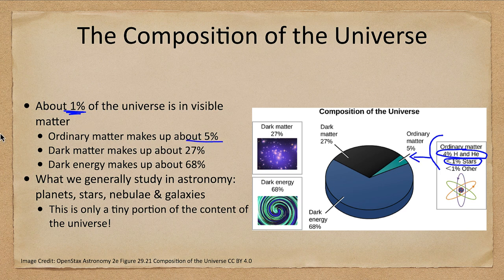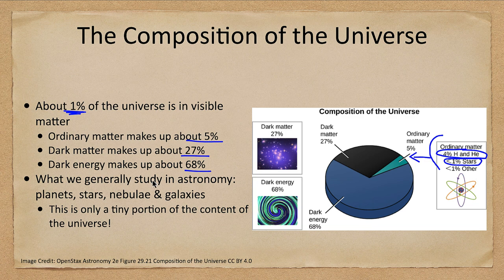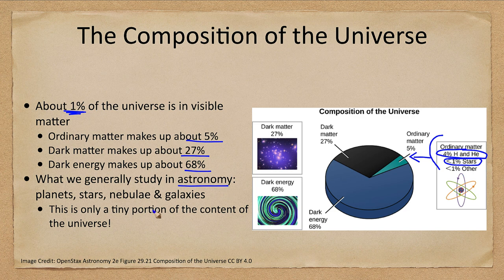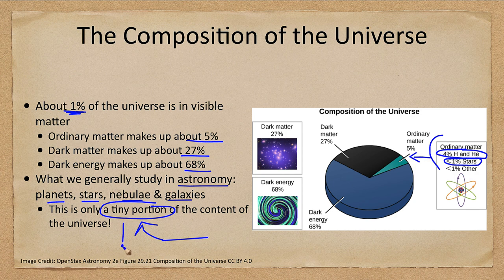But 1% of it is in the visible form that we can see. Dark matter makes up about 27% of the universe and dark energy 68%. So what we study in astronomy and what we've looked at over the course of these lectures - the planets, the stars, the nebulae, the galaxies - is only a tiny portion of the content of the universe.